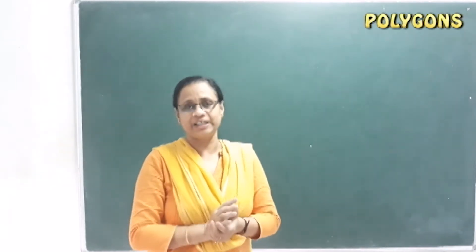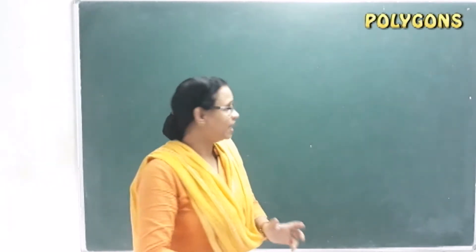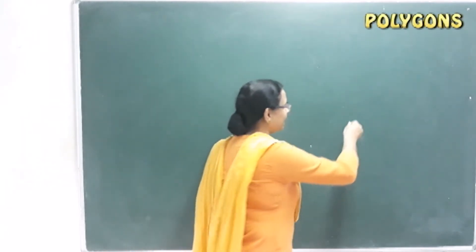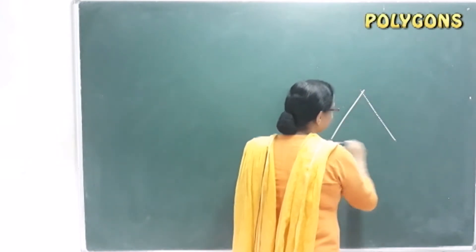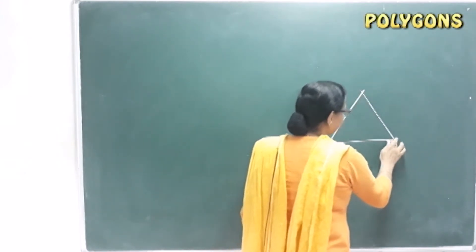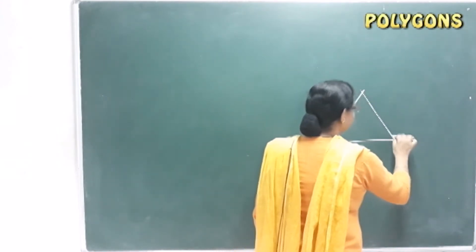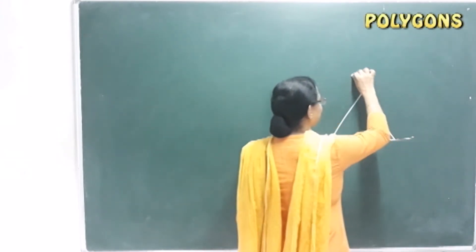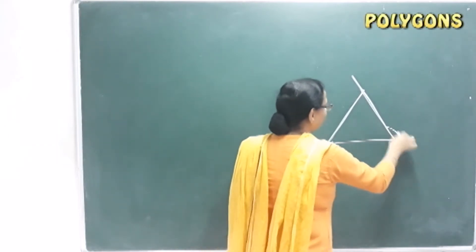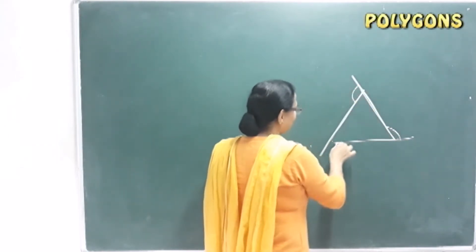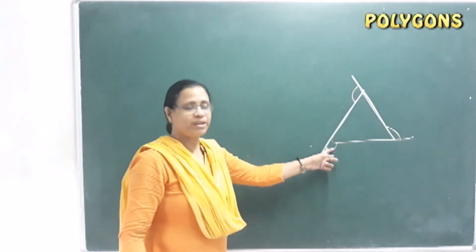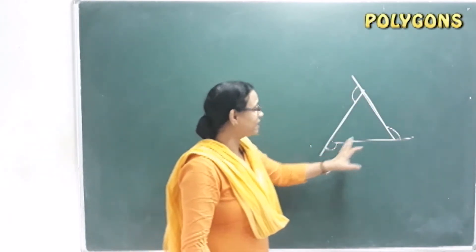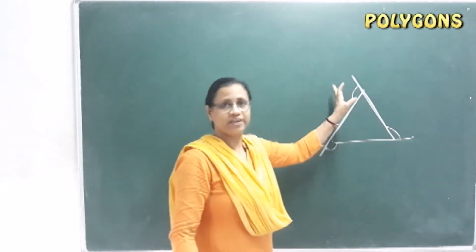Now, for a triangle, the sum of the inner angles is 180 degrees. The sum of the outer angles — the exterior angles — is 360 degrees.